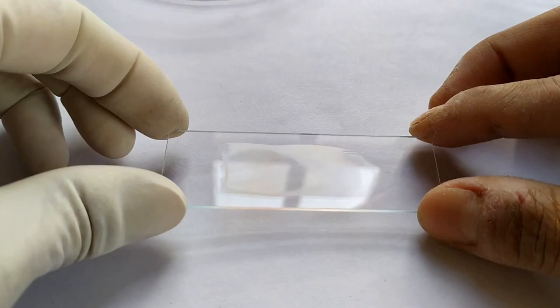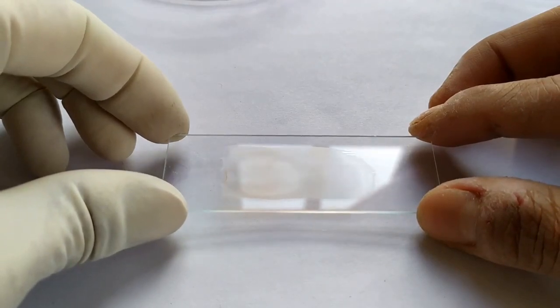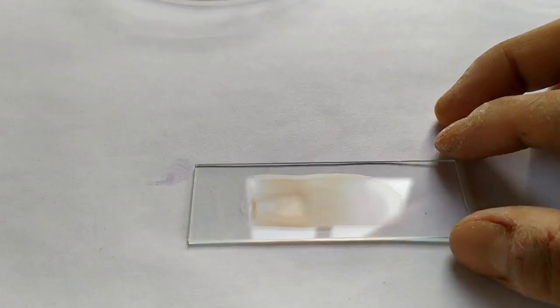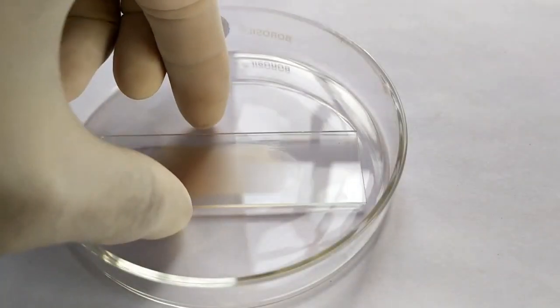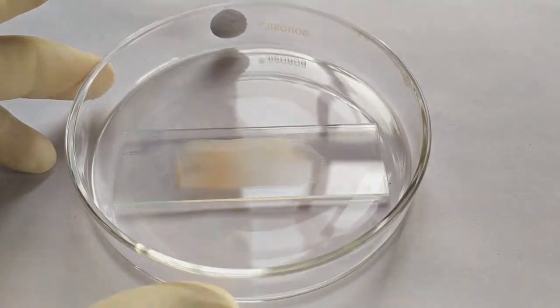A properly smeared blood appears roughly tongue-shaped. Allow the smear to air dry for a minute or so. Place the slide in a petri dish with the blood smear facing up.